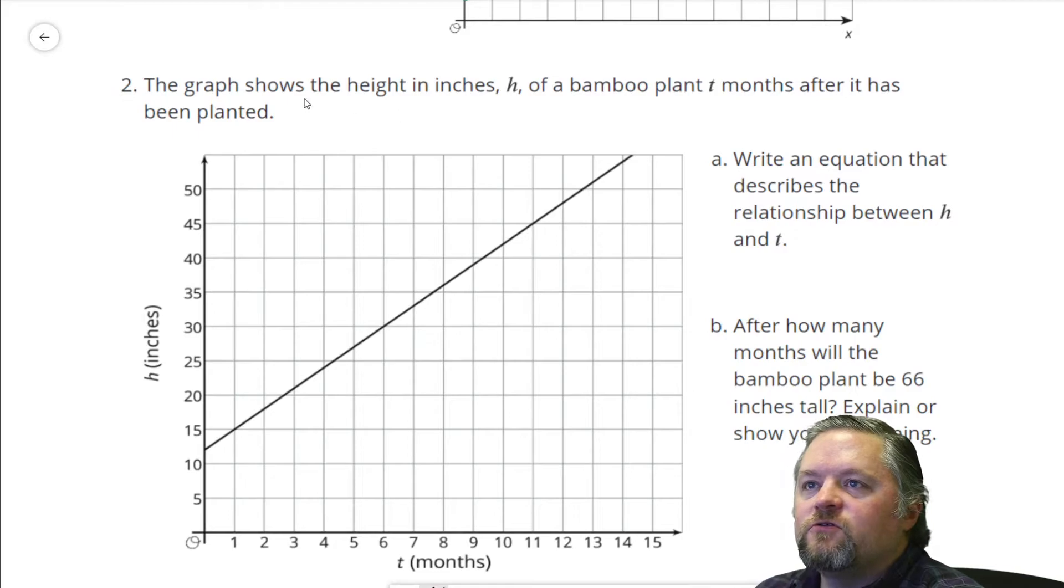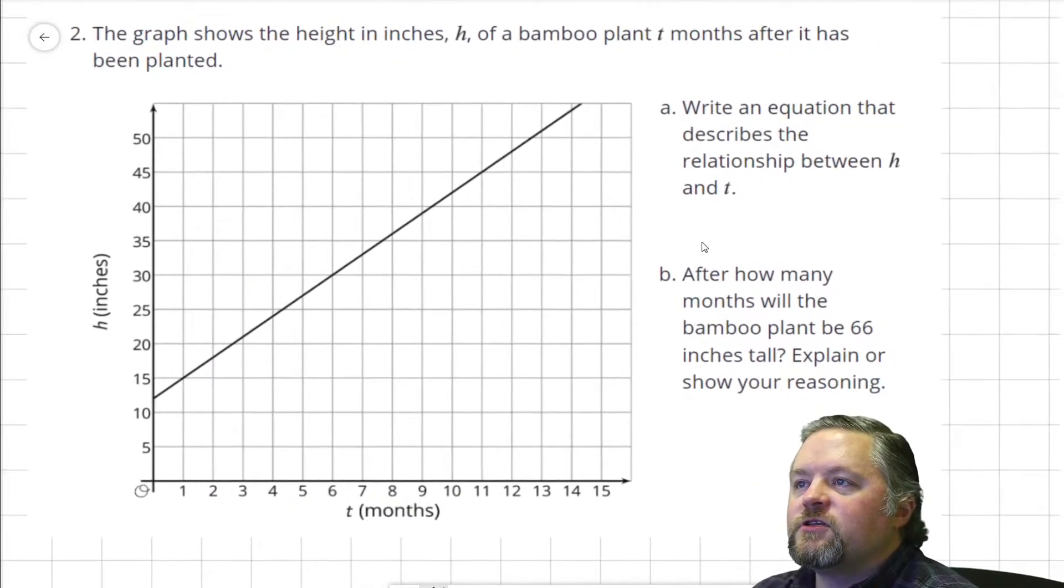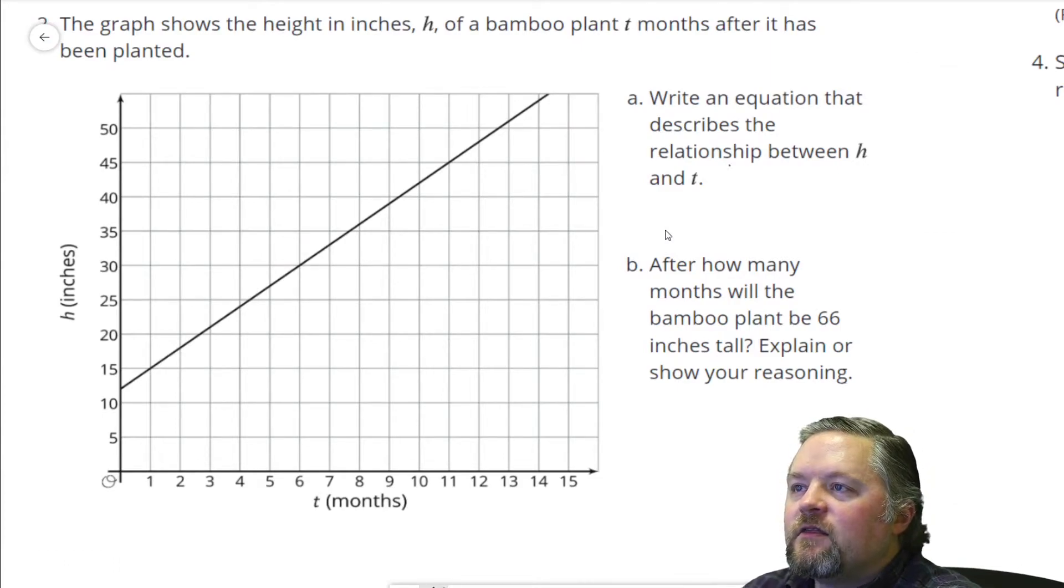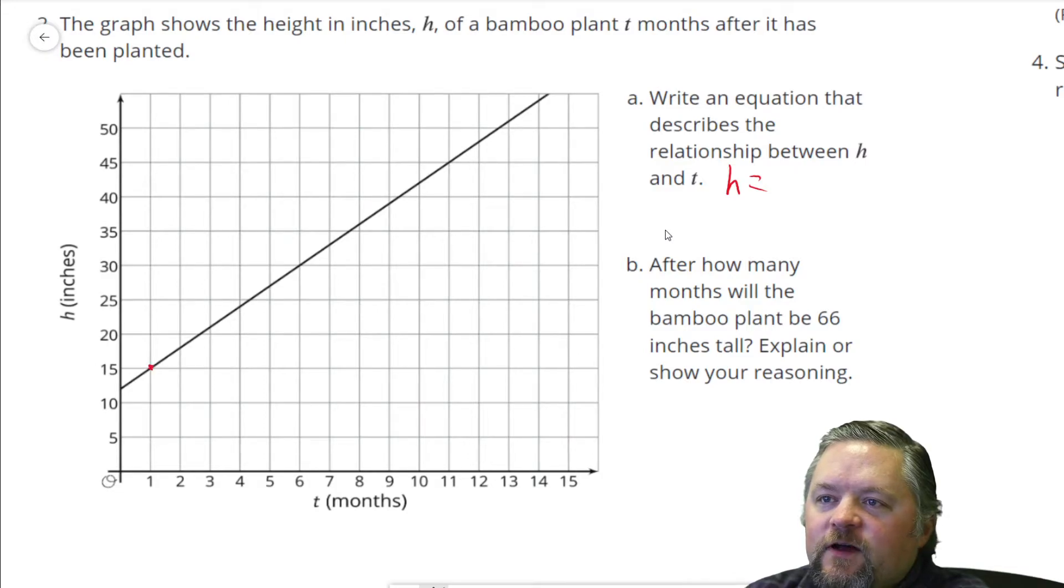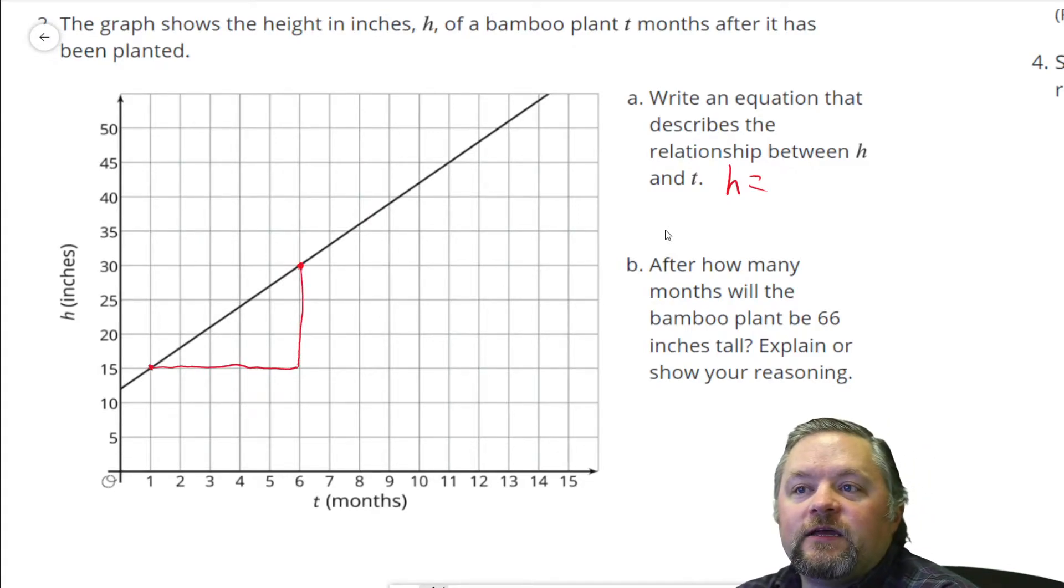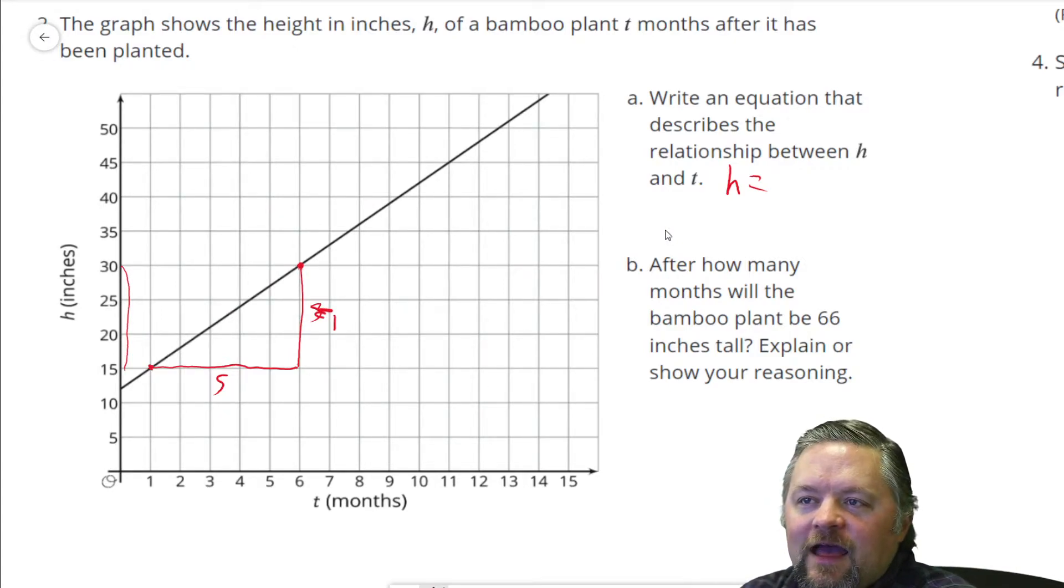Okay, the graph here shows the height in inches, h, of a bamboo plant t months after it has been planted. Write an equation that describes the relationship between h and t. The height is equal to, oh well we need a slope. How do we find the slope? We've got to find some good points. Those both look like good points. Slope is rise over run. That looks like three over five. Right, you yelling at me yet? This is not three. We have to make sure to check our scale. We went from 15 to 30, that's not three, that is 15. So our slope, which is rise over run, is 15 over five. 15 divided by five is three.